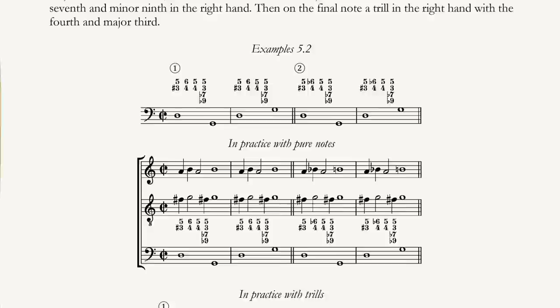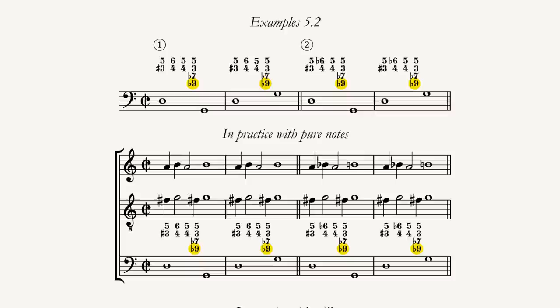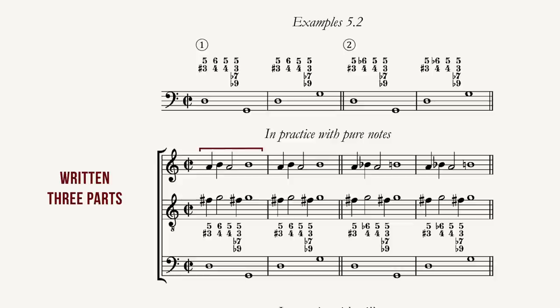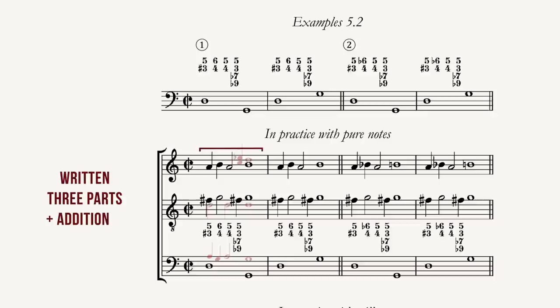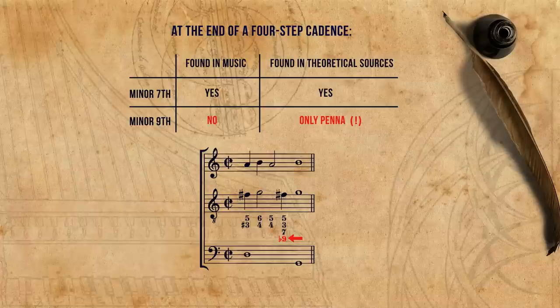For example here, in the realisation of what we call on this channel an authentic four-step cadence, Penna adds two figures that are not represented by notes: a minor 7th, and a very surprising minor 9th. Let's first hear what only the written three parts sound like. Now let's add some more consonances in general, and specifically those added by Penna. The minor 7th at the end of a cadence is something we sometimes see in compositions already from the beginning of the 17th century. The minor 9th, however, is not.